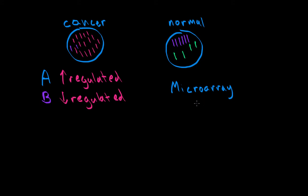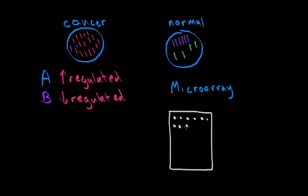This chip has a bunch of small holes arranged in lines — hundreds and hundreds of holes — which we call wells. Each well represents a specific gene. If we place the complementary mRNA strand to gene A's mRNA in a well, then when we add the mRNA to the well, it will bind. When it binds, we can attach a fluorescent marker that lets us see whether something is bound to that well or not.